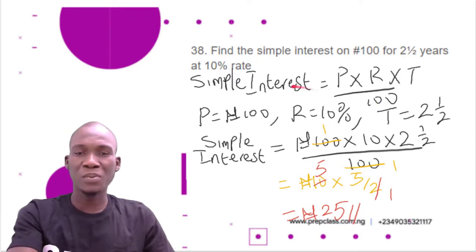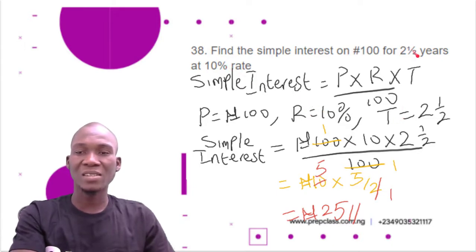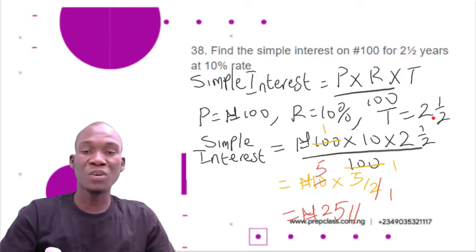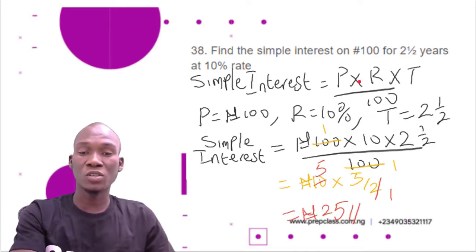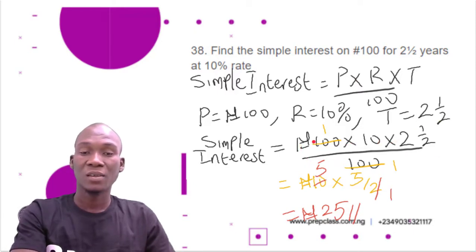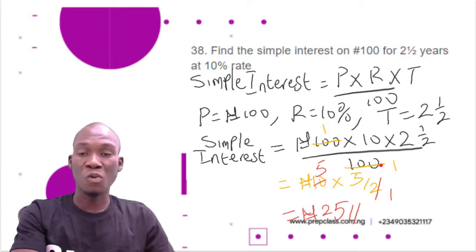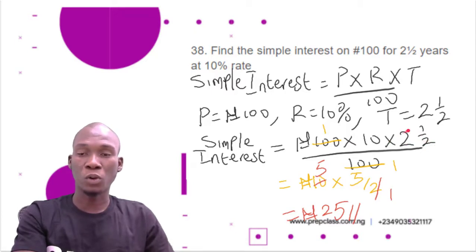Principal is the amount, which is 100 naira. Rate is the percentage, which is 10%. Time is the number of years, which is 2.5 years. Substituting into the formula: Simple Interest = 100 × 10 × 2.5 ÷ 100. The two 100s cancel, leaving 10 × 2.5.